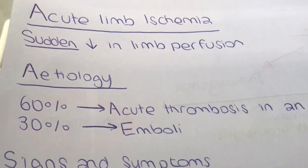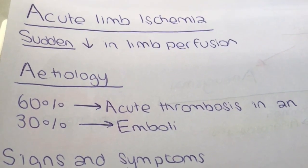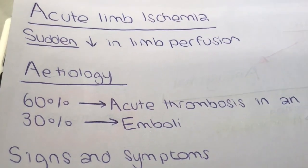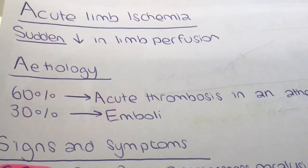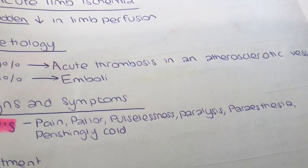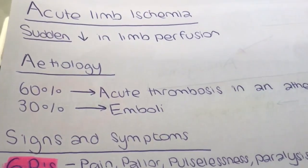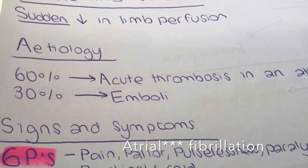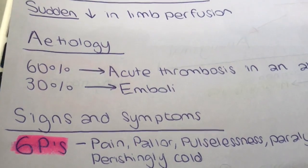Moving on to acute limb ischemia, this is described as a sudden decrease in limb perfusion that threatens the viability of the limb. Unlike chronic limb ischemia, these patients will present to the emergency department. The etiology is mainly due to two reasons: 60% of the time it's due to acute thrombosis in an already atherosclerotic vessel, and 30% of the time it's due to emboli, which could come from the heart — such as in atrial fibrillation — or from aneurysms or other atherosclerotic vessels.